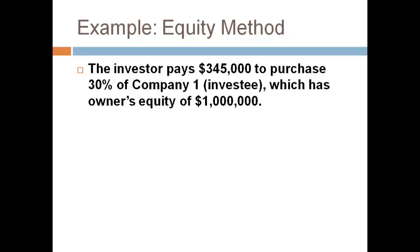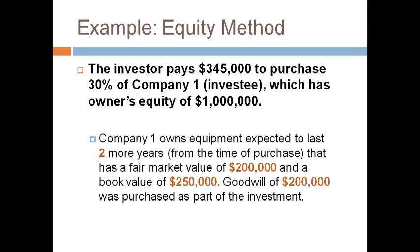If the fair market value — the amount paid by the investor — was equal to the book value of the company, the investor would have paid $300,000, which is $1 million times 30%. The investor pays more than book value because of the equipment with a book value lower than fair market value, and because the investee has goodwill that was internally generated and is not recorded on the balance sheet.